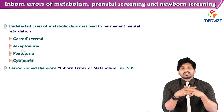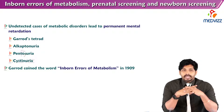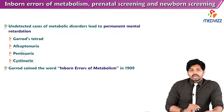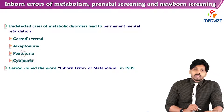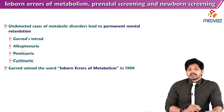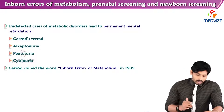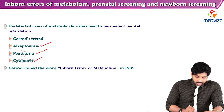Undetected cases of metabolic disorders lead to permanent mental retardation and sometimes death as well. The first thing to note about metabolic disorders is Garrod's Tetrad — the four common metabolic disorders, including alkaptonuria, pentosuria, cystinuria, and albinism.